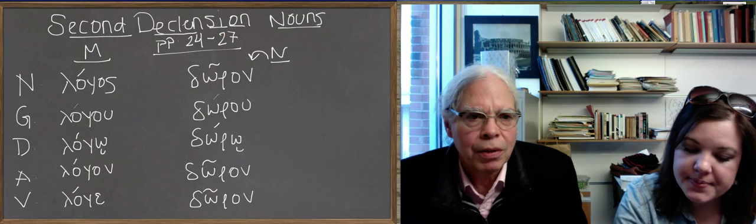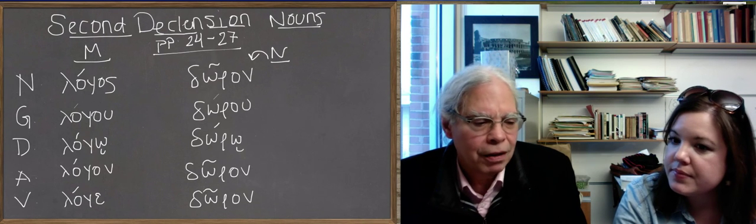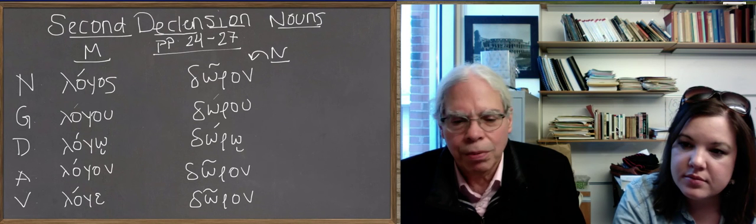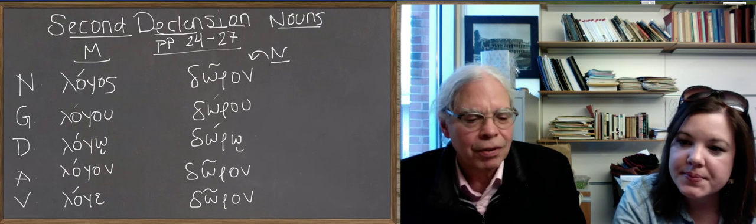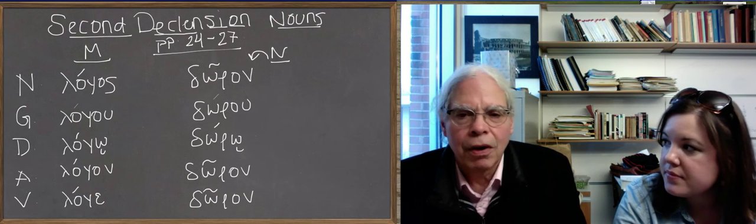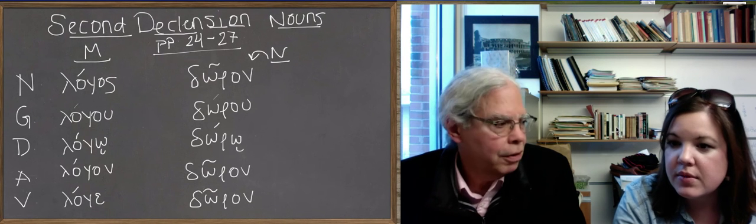But you can generally work in Greek with the notion that if it's the first declension noun of the techne type, it's feminine. That's secure. There are no masculines of the techne type. Most nouns of the logos type are masculine, with some exceptions, and all nouns of the doron type are neuter.